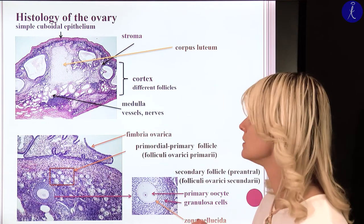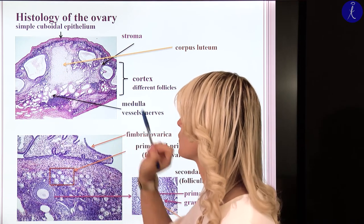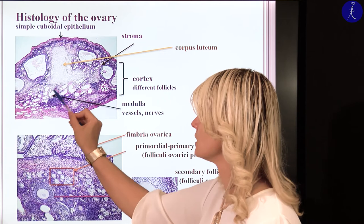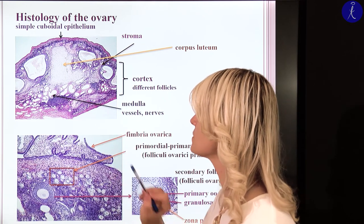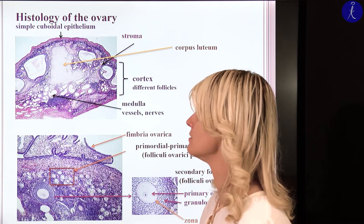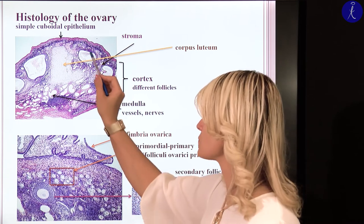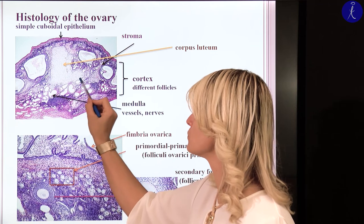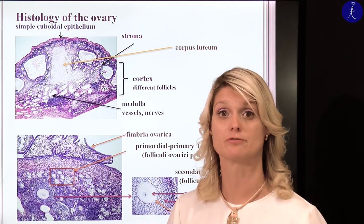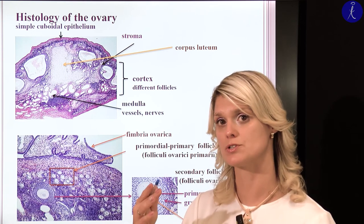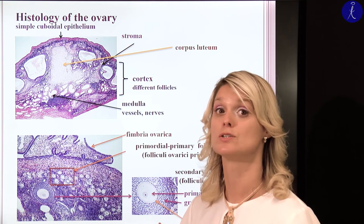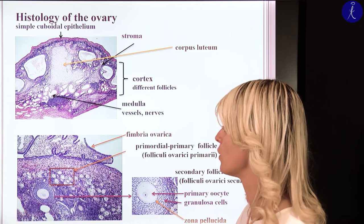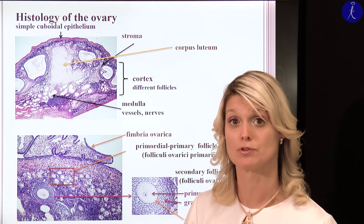The next picture will show you the histological structure of the ovary. This is the medulla, and here we can see the cortex. In the medulla, we have cross-sections of vessels and nerves. In the cortex, we can see the different stages of developing follicles. The smallest ones are the primordial follicles. This bigger one is a tertiary follicle. You can also see a large corpus luteum, and also degenerating follicles — those follicles which underwent development but did not ovulate.